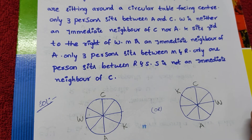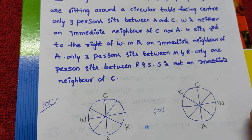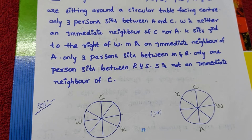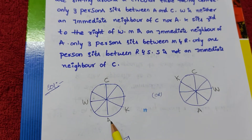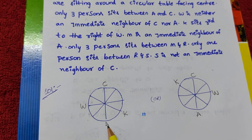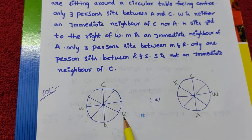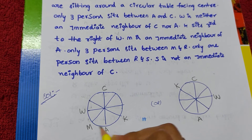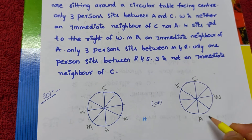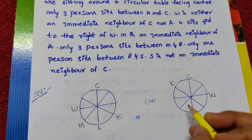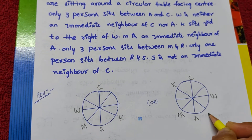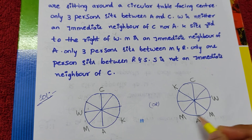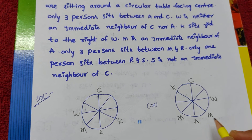M is an immediate neighbor of A. You already know A's position. In the first diagram, M can't go here because K is already there. In the second diagram, A is here, so M may come on either side — both positions are empty — so I am taking two assumptions in this diagram.